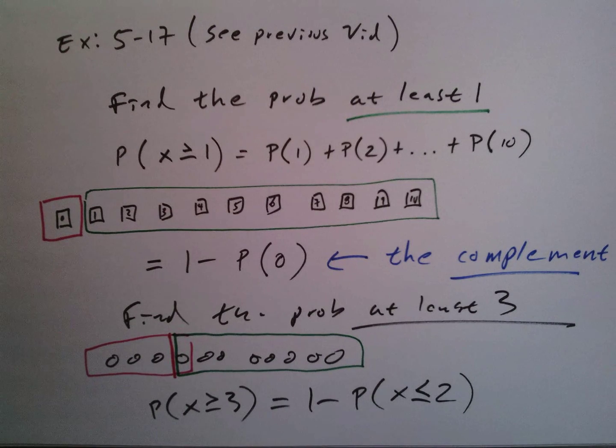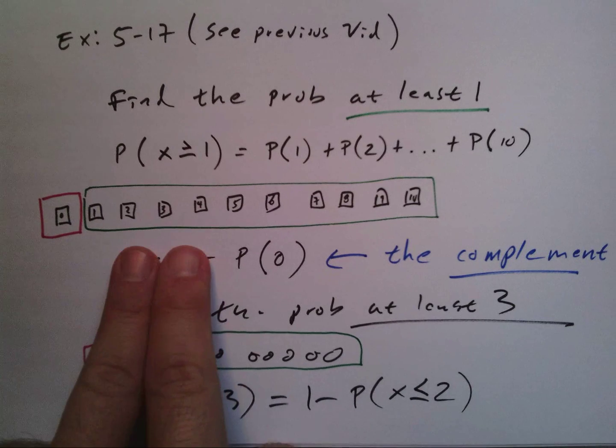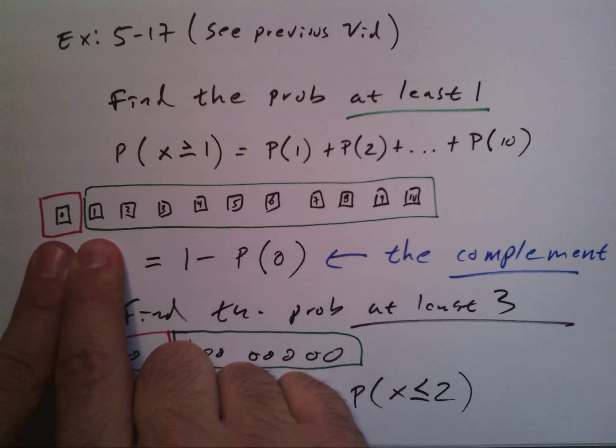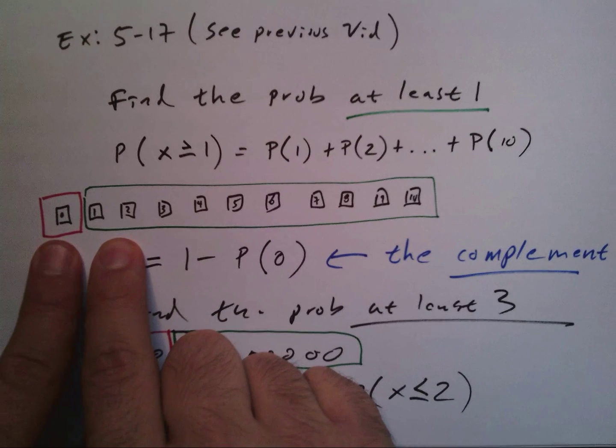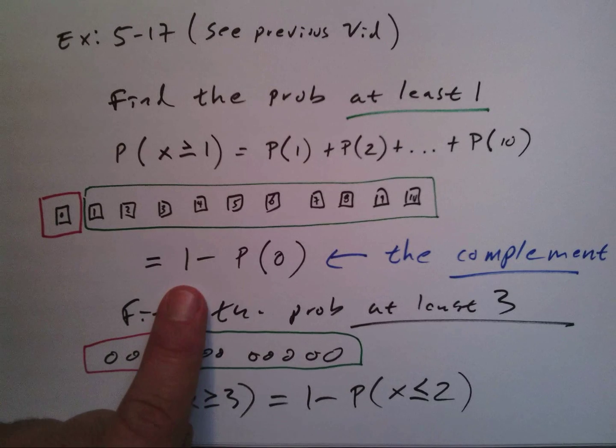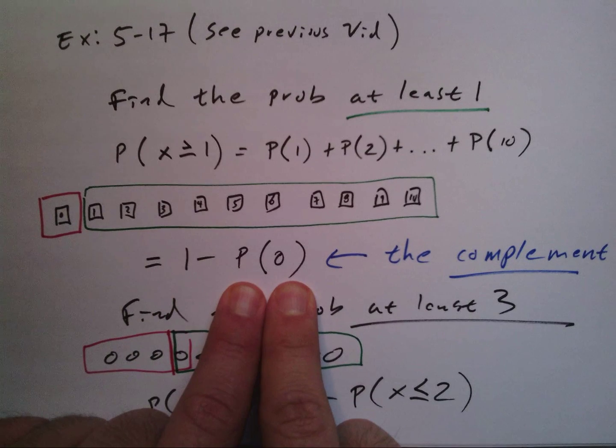So what we need to do with the phrase 'at least one' is make it so that we use the CDF counting from zero up to what we want to include. That's why I'm using these boxes, and I'm very clearly defining in green what a success is and what a failure is.